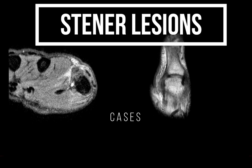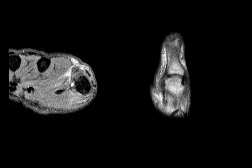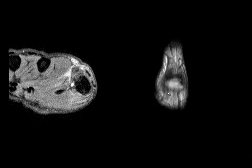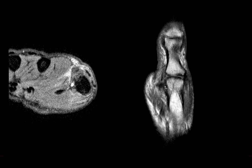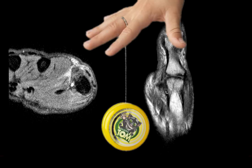It's probably best to start on the coronals. Here is the MCP joint. What you want to do is identify the UCL — the course the UCL should take — and also the aponeurosis. Here is the origin of the UCL, and here is the radial collateral ligament. What we want is a similar structure on the radial side. Instead, the ligament origin is here but rather than going volarly, it's going laterally and laying over the aponeurosis — which can be referred to as the 'yo-yo on a string' sign, the classical sign for a Stener lesion.